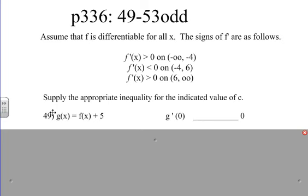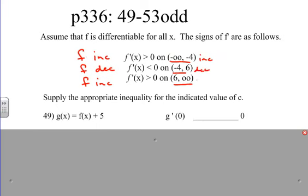We're going to supply the appropriate response. Assume that f is differentiable for all x, and the signs of f prime are given. F prime is greater than zero on one interval — meaning f is increasing. F prime is less than zero on another interval — meaning f is decreasing. Then f prime is greater than zero again — f is increasing. So we have increasing, decreasing, increasing intervals for f.